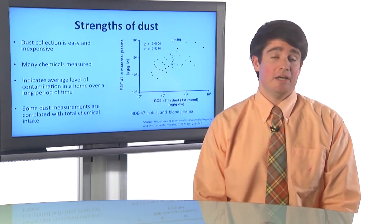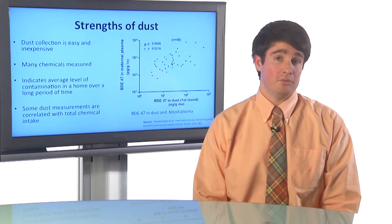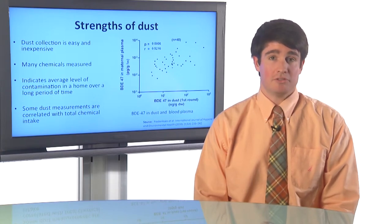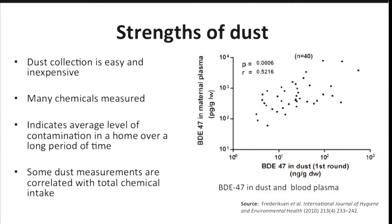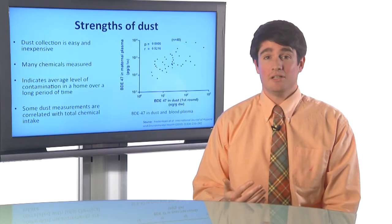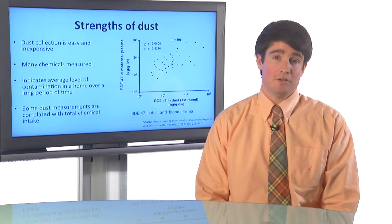The final advantage is that some dust measurements are highly correlated with the total chemical intake, which is assessed using a biological measurement. For example, I'm showing here a plot that compares BDE-47, which is a flame retardant, in dust measurements from 40 homes with BDE-47 in maternal plasma — in the blood. So we're comparing what we're measuring in the dust to what we can find in mothers' bodies. We see that when there's a low level in the dust, there's also a pretty low level in the mom's body, and when there's a high level in the dust, there's a pretty high level in the mom's body. This indicates that what we measure in the dust can be an effective marker of what people are exposed to in their total chemical intake.